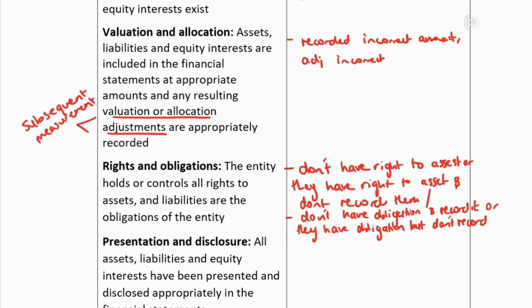Presentation and disclosure: the risk is simply that it's not presented and disclosed according to IFRS. Each of these assertions will result in the balance being either over- or understated — that's non-negotiable.